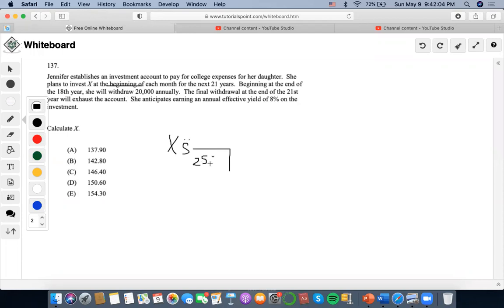Another key detail is that she anticipates earning an annual effective yield of 8%. We need to convert this to a monthly rate for the equation we're working with.